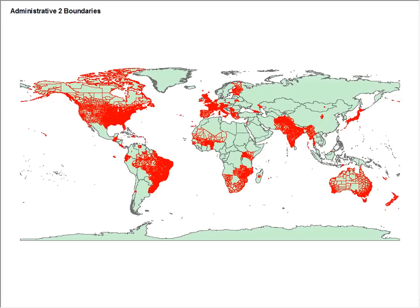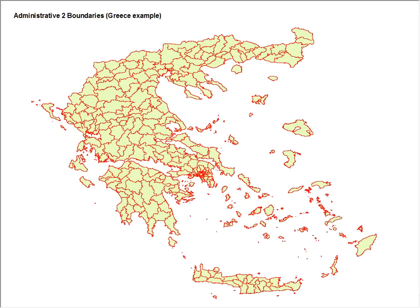We have also increased the number of Administrative 2 boundaries around the world. This layer currently contains over 25,800 second level boundaries in 86 countries. Here we have the Administrative 2 boundaries for Greece.